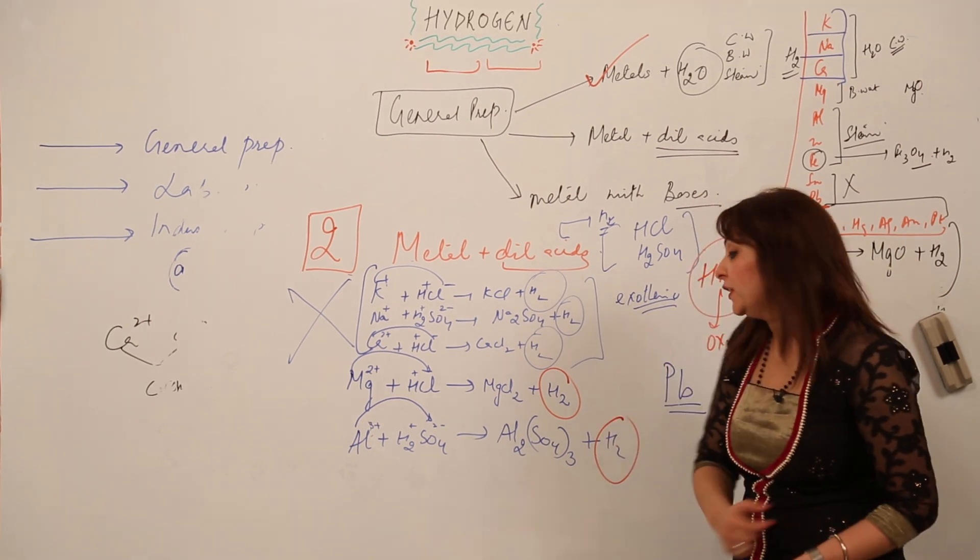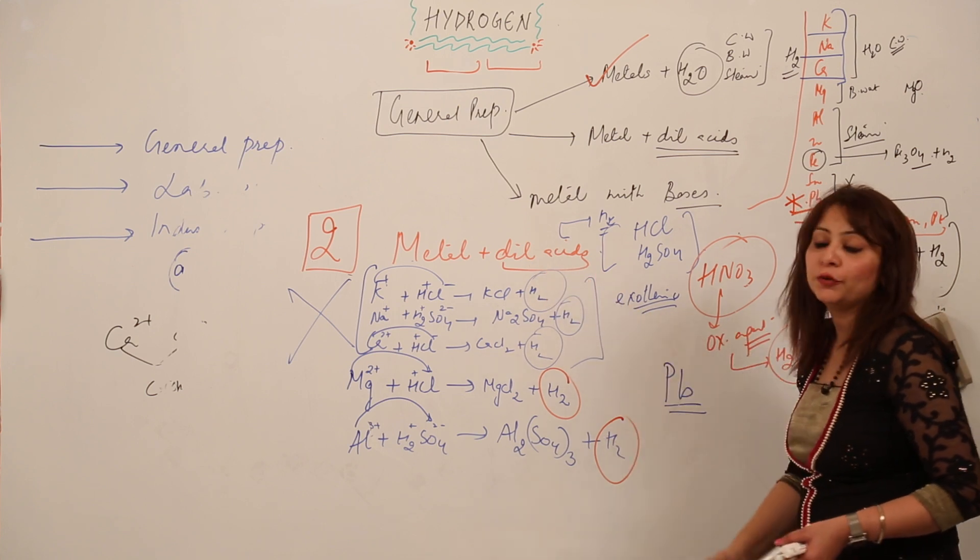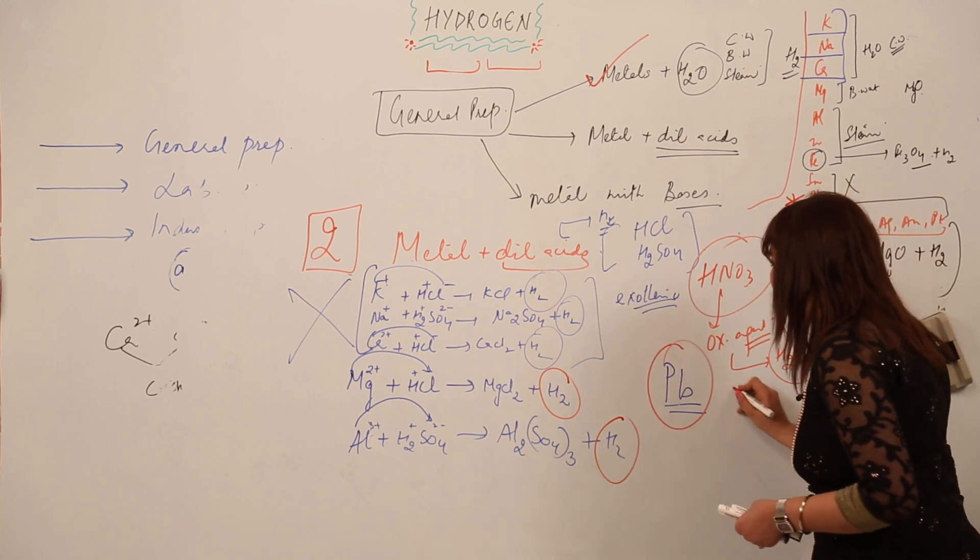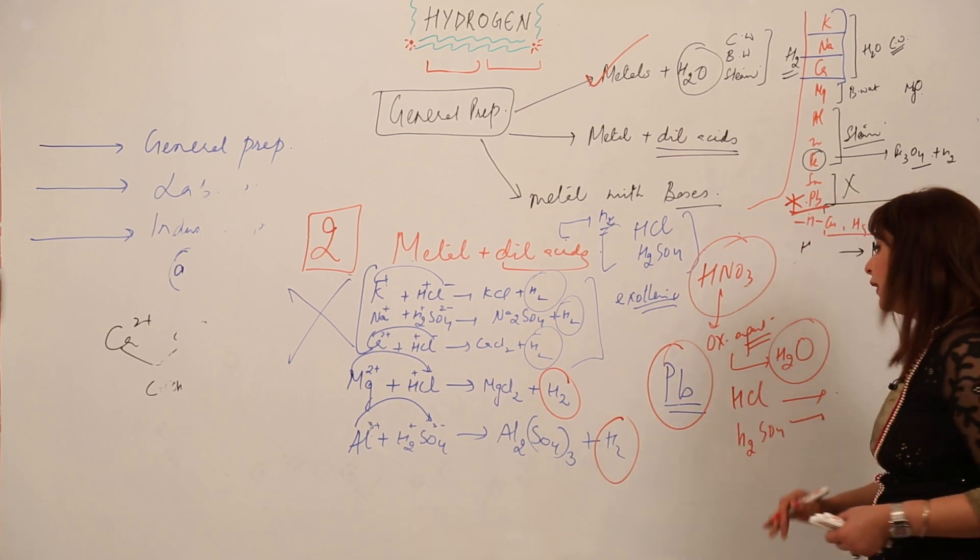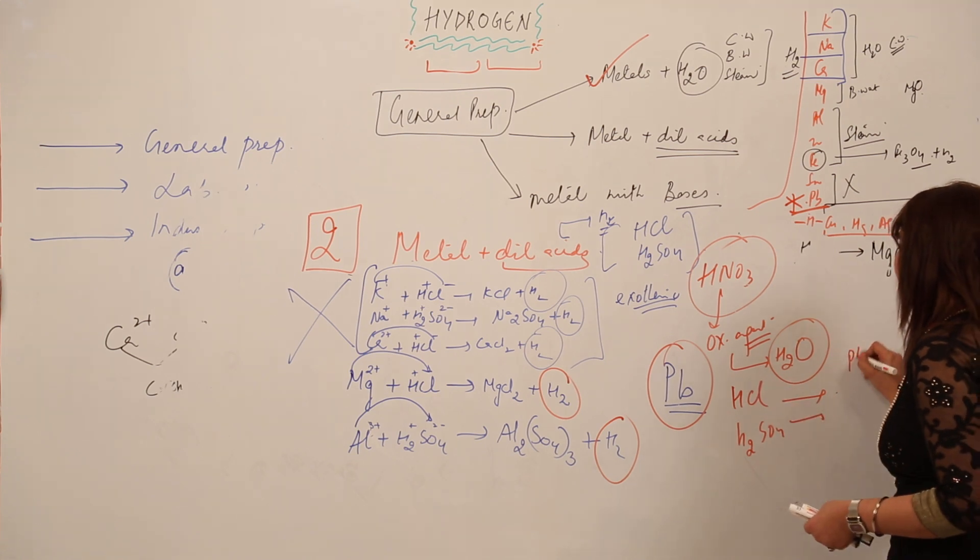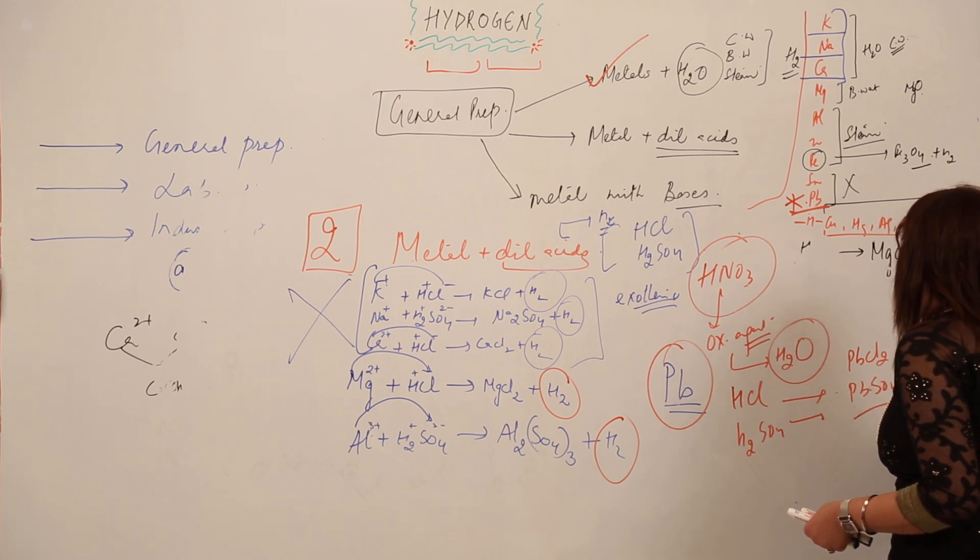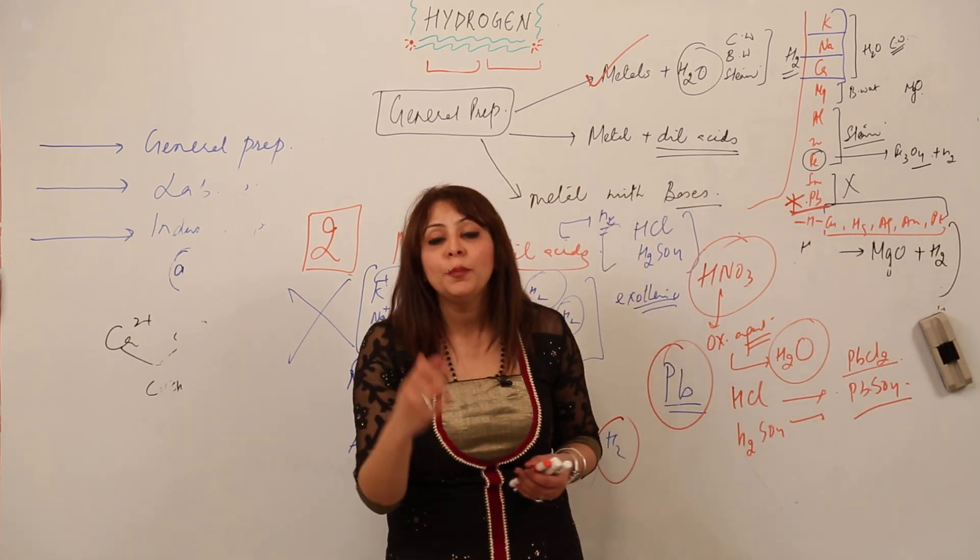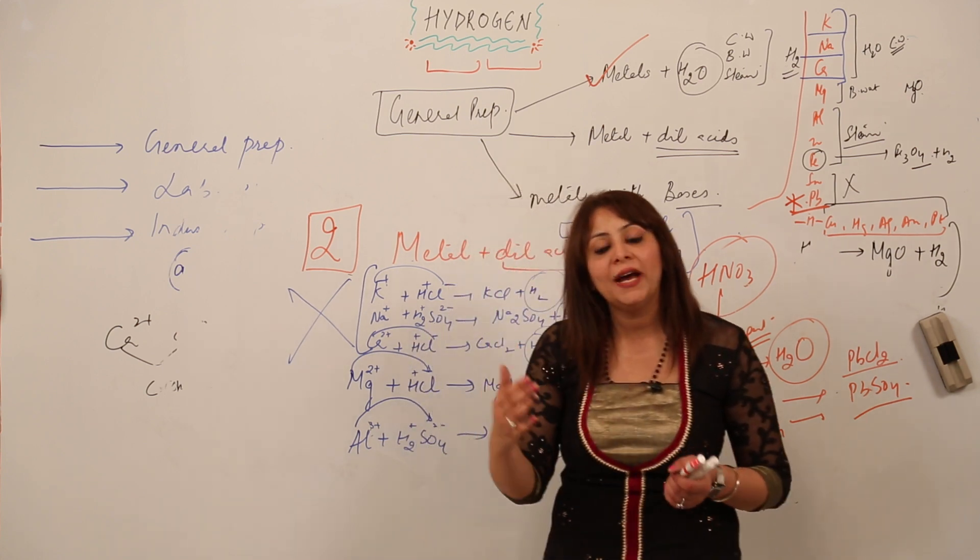I was telling you that we cannot use lead for preparing the metal from the dilute acid. The reason being when lead is used with HCl and H2SO4, it definitely reacts with them, but when it reacts with HCl it leads to the formation of lead chloride, and when it reacts with sulfuric acid it leads to the formation of PbSO4, that is lead sulfate. So what is the problem that we cannot use lead?